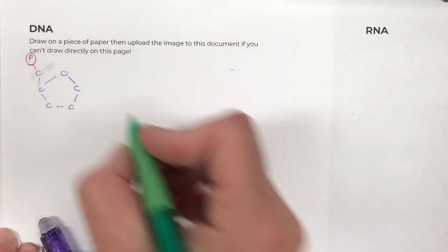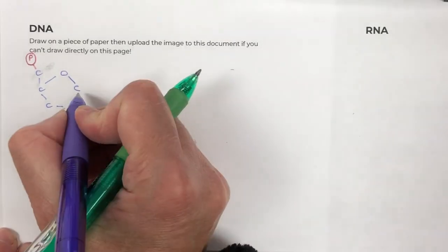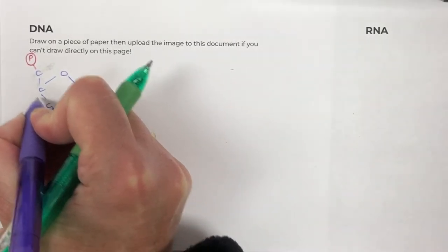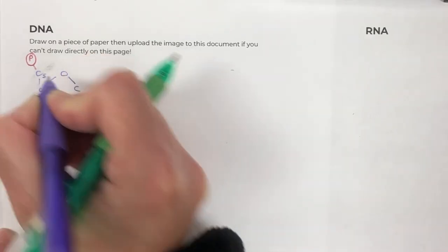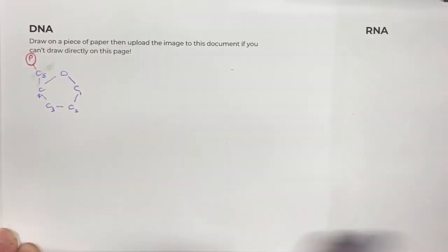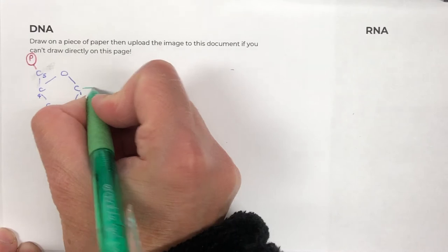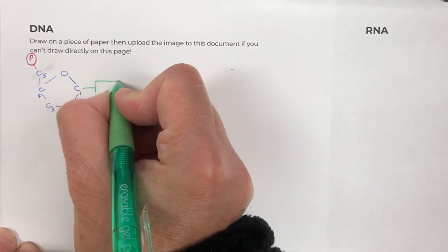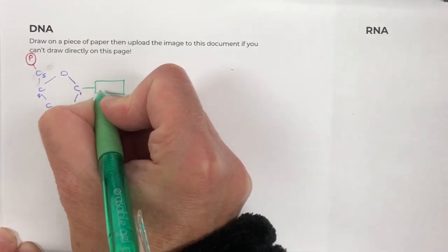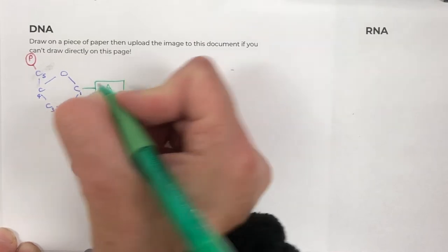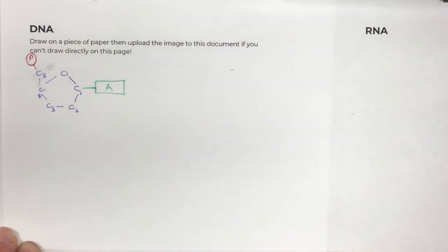We also have on the first carbon, so let's label them. One, two, three, four, five. On the first carbon, carbon number one, we have our base. And I'm not just going to write base. I'm actually going to write A for adenine, and I'm going to make sure that the line actually touches it to show that yes, it is bonded.